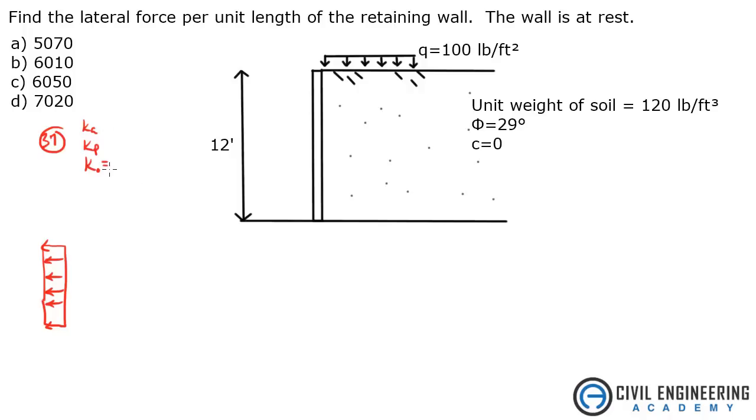In the Civil Engineering Reference Manual, if you look at equation 37.21, it gives us K0 is 1 minus sine of phi. So let's solve for that: 1 minus sine of 29 degrees gives me 0.515 equals K0.